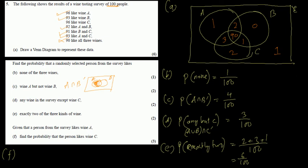For part F we have a conditional probability — given that the person likes wine A. Whenever 'given' information is provided, the total changes. Previously the total was 100 people, but now it is given A, so the total is 96. Out of those 96, we find how many like C: 93 people in set A also like C. So the probability of C given A is 93/96.